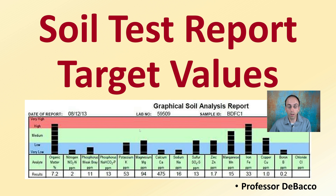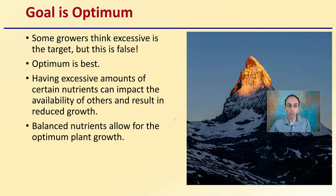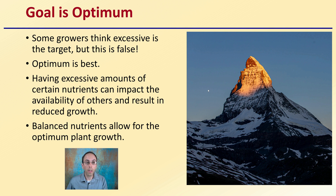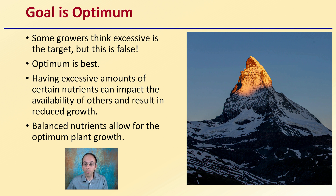We don't want to be above or below that — that's the goal area. The goal is to be in the optimum area. Some growers think excessive is the target, but this is false. Optimum is the best. Having excess amounts of certain nutrients can impact the availability of others and result in reduced growth. Balanced nutrients allow for the optimum growth of a plant.